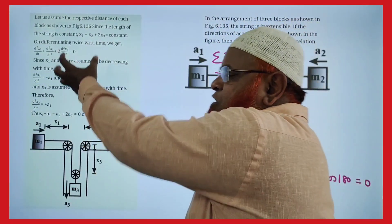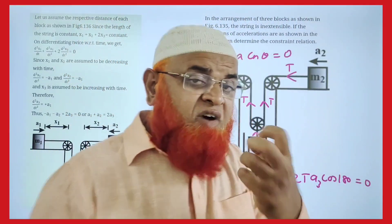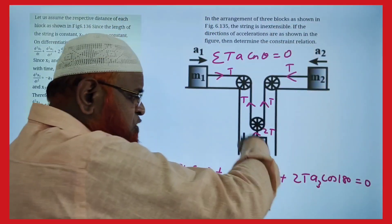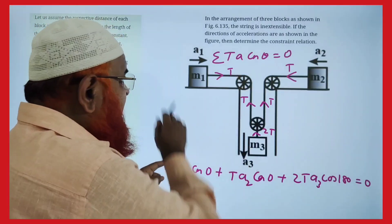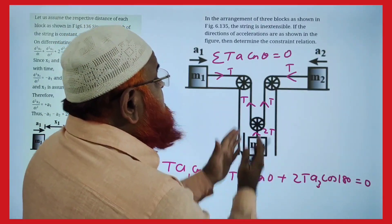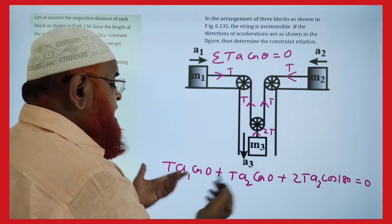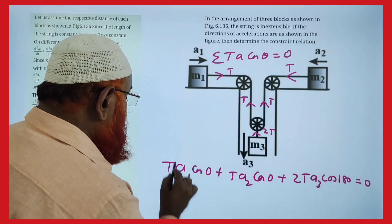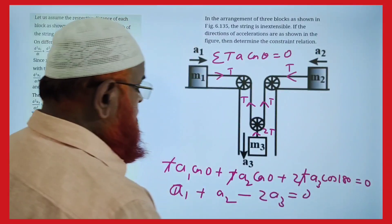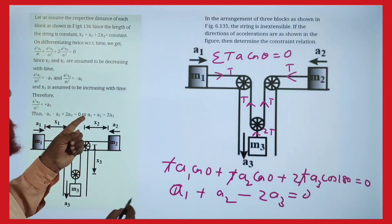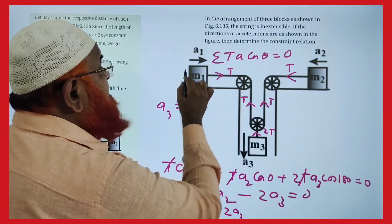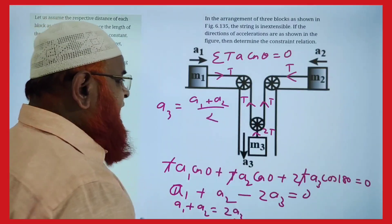Generally these pulley problems are done using differentiation, but for students unaware of differentiation, there is a special short trick: ΣTA = constant. Two blocks move with acceleration A1 and A2, and the middle pulley moves downward with acceleration A3. Tension T times A1 (cos 0) plus T times A2 (cos 0) plus 2T times A3 (cos 180°) = 0. This gives A1 plus A2 minus 2A3 = 0, so A3 = (A1 + A2)/2.